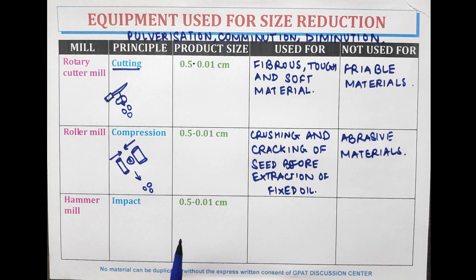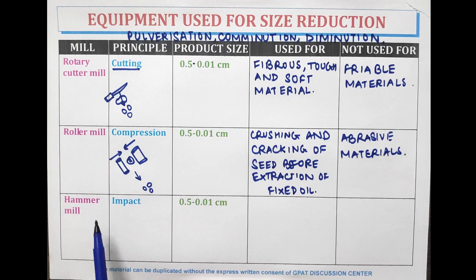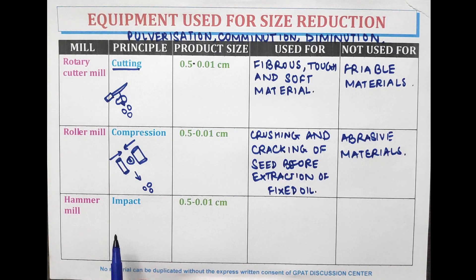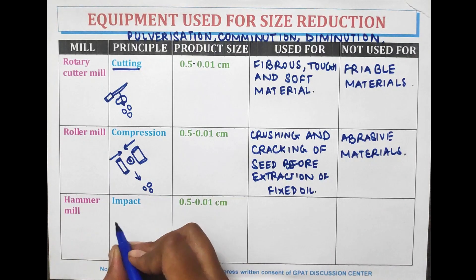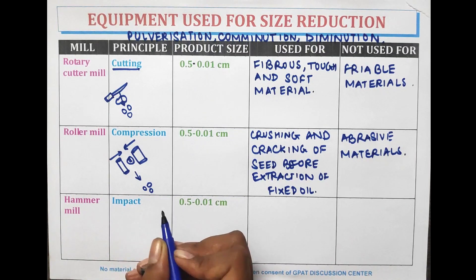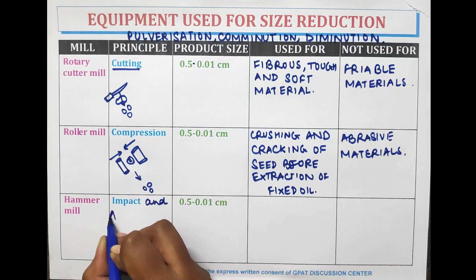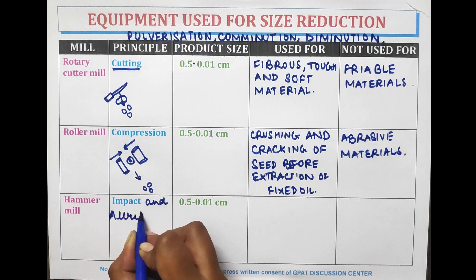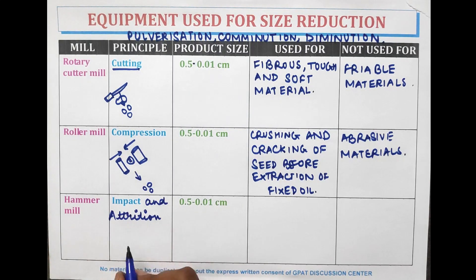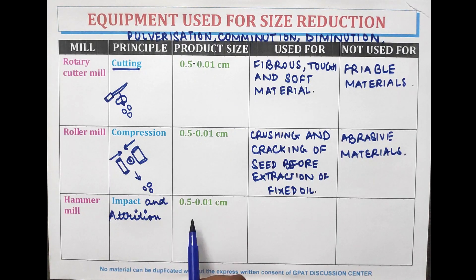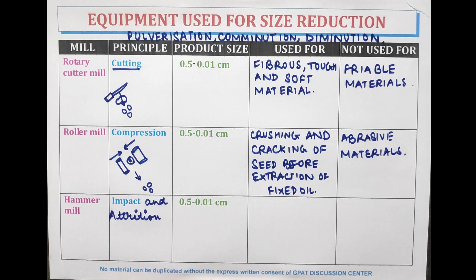Another type is the hammer mill. The hammer mill reduces the size of objects by the principles of impact and attrition. The product size is 0.5 to 0.001 cm.